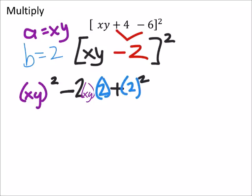So I've got 2 here and here, and this would give me x squared y squared, and this would be minus 2 times 2 is 4, and I still have the xy, and then I would add this to 2 squared, which is 4.